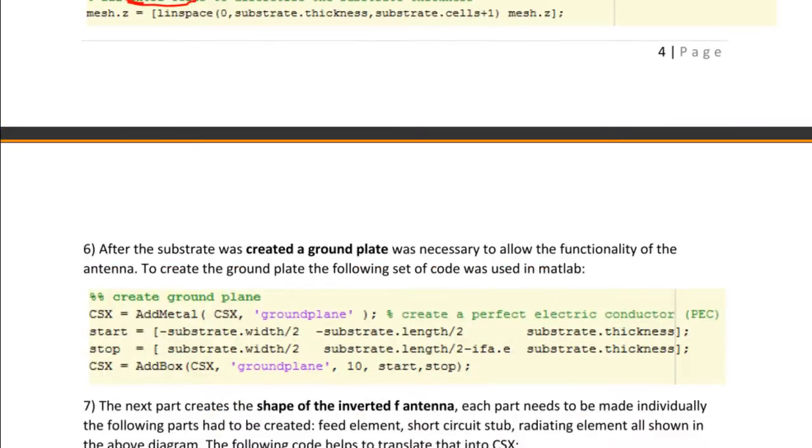After creating the substrate, we did create a ground plate, and the ground plate was really necessary. It allows the functionality of the antenna. The ground plate is made by a variety of functions in OpenEMS. So we have to add a metal, what kind of metal you're going to have for the ground plate, and that's a perfect electric conductor, an ideal conductor. And then we have how the ground plate will look in OpenEMS.